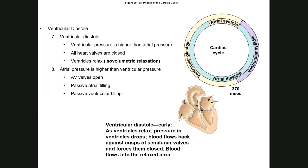As the ventricle relaxes, the pressure in the ventricle drops. Blood flows back against the semi-lunar valves, forcing them to close. Blood flows into the relaxed atrium because the atrioventricular valves open, allowing passive atrial filling, and the system restarts again.